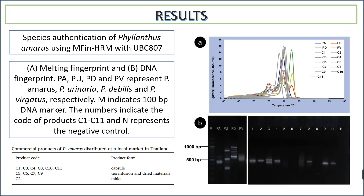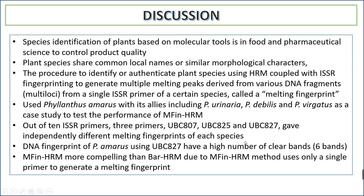In the discussion, species identification of plants based on molecular tools is important in food and pharmaceutical science to control product quality. Plant species often share common local names and similar morphological characters. The MFin-HRM procedure, compared with ISSR fingerprinting, regenerates multiple melting peaks derived from various DNA fragments using a single primer, independently giving different melting fingerprints for each species.